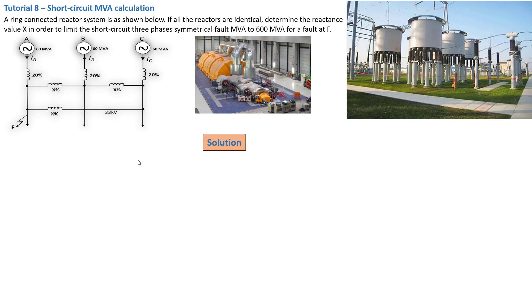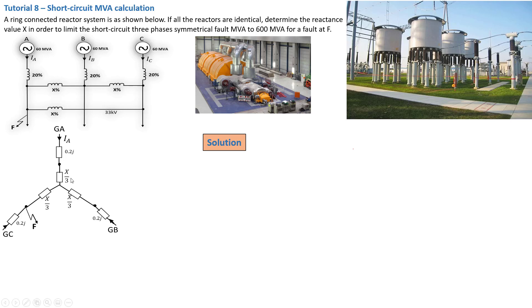We resolved that a ring-connected system is basically a delta system. We then needed to convert or transform from a delta into a star configuration. We got to a point where we had all the X% reactances that we needed to determine, and these were then replaced by X over 3 — that is converting from a delta system into a star system.